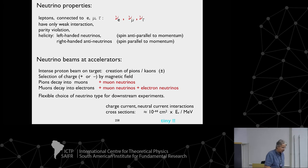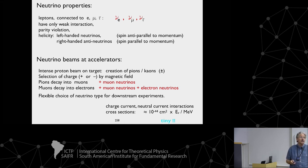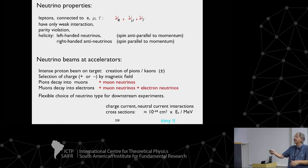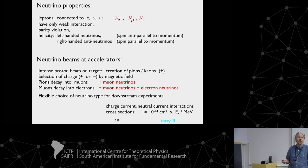Regarding neutrino properties: there are three species — electron neutrino, muon neutrino, and tau neutrino — and we can prove these are not the same. Neutrinos have only the weak interaction, no charge, no strong interaction. They show parity violation and are largely left-handed on production, with spin anti-parallel to momentum, while antineutrinos are largely right-handed with spin parallel to momentum.